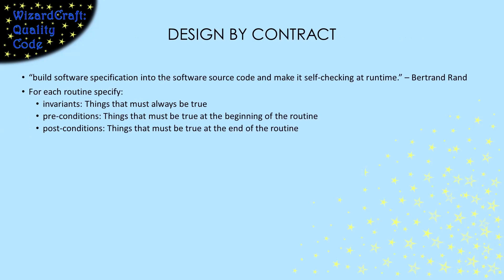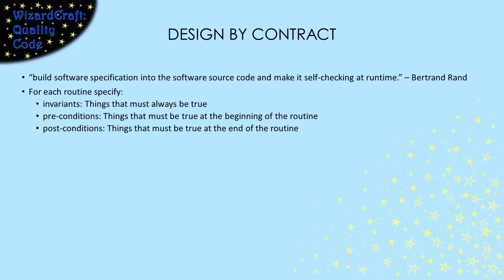One strategy for thinking about checks you need to make is called design by contract. With that strategy, we encode the error checking requirements into the code so that we're sure they're checked at runtime. In this strategy, we specify three things. First, there are invariants, which are conditions that must always be true. Then, for every routine, we specify pre- and post-conditions. Pre-conditions are things that must be true at the start of the routine — these are often restrictions on arguments, but they can also be rules about the state of the system when the routine is called.